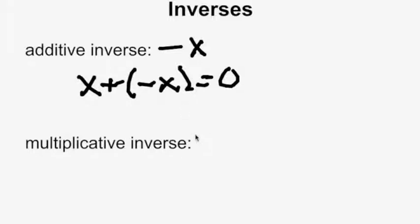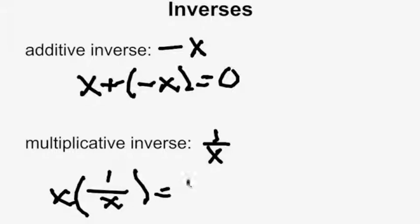The multiplicative inverse is 1 over x. If you multiply that by the same number, so x times 1 over x, you get 1, which is the multiplicative identity element.